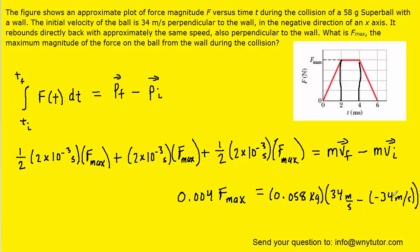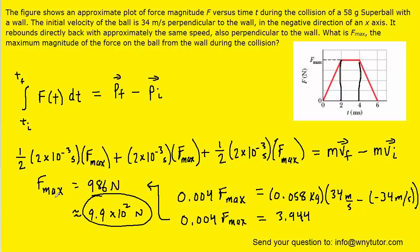We can also simplify the right-hand side now. And then finally, we can divide both sides of the equation by the .004. And when you do so, F max turns out to be 986 Newtons. And then in scientific notation, we can write that as approximately 9.9 times 10 to the power of 2 Newtons. So that would be the final and correct answer.